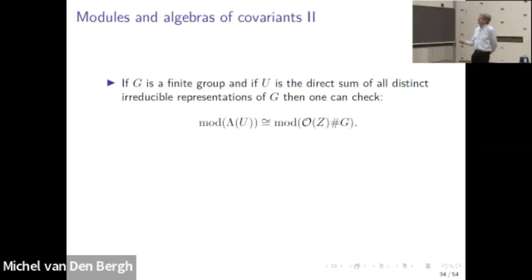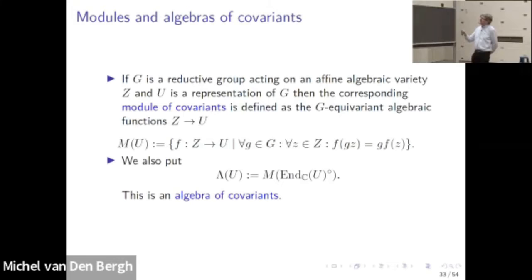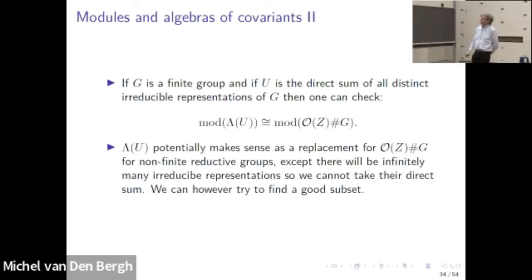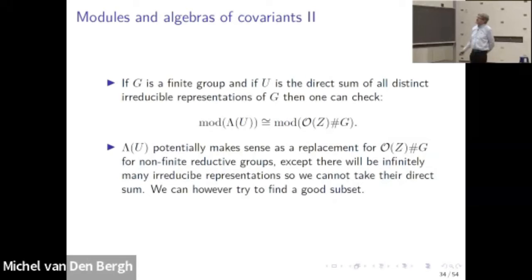Now we have something that makes sense if G is not finite. If you go back at the definition, nothing there requires that G is finite. The only issue is that we cannot take the sum of all irreducible representations, because there would be infinitely many for an infinite group — so we'd get something which is much too big.